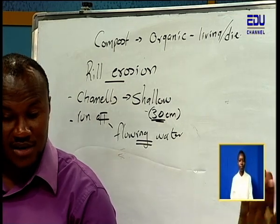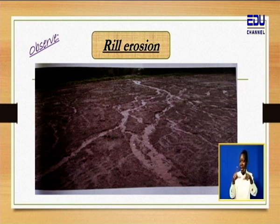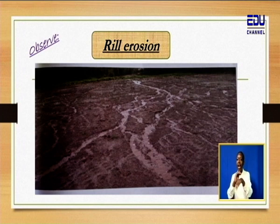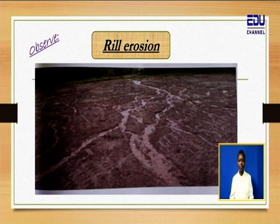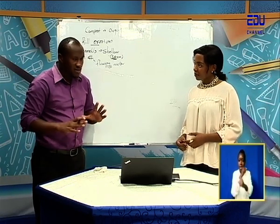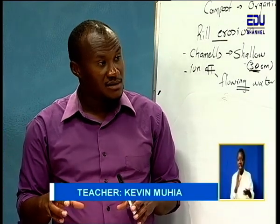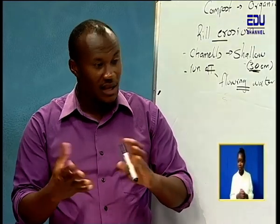That is rill erosion, because of those shallow channels. Looking at that ground - the first thing I notice is that it has no cover crop. There is no cover crop. Now, when you're handling plants or even when you're handling tools, you have to wear what we call protective clothing. You cannot just go into the farm anyhow - some plants are poisonous, some have thorns that can pierce you, and once you press some plants they produce very poisonous or very irritating substances.